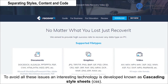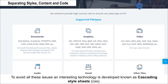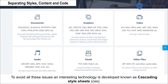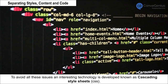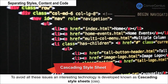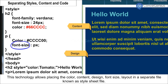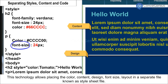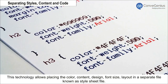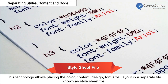To avoid all these issues, an interesting technology was developed, known as Cascading Style Sheets. This technology allows placing the color, content, design, font size, and layout in a separate file, known as a Style Sheet File.